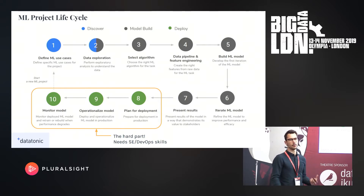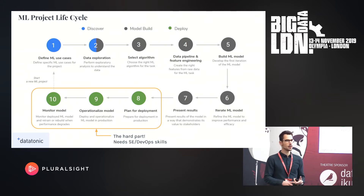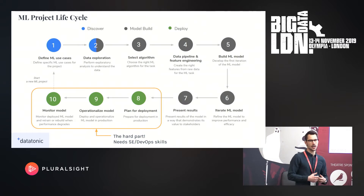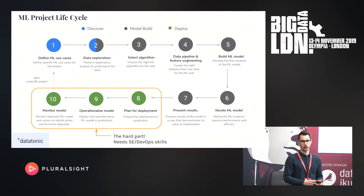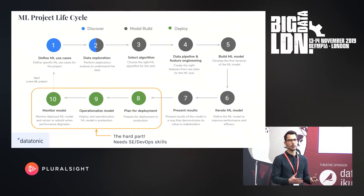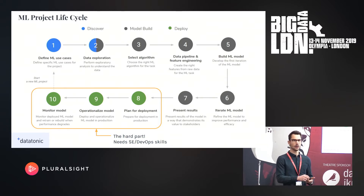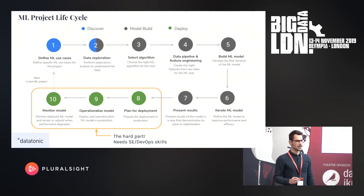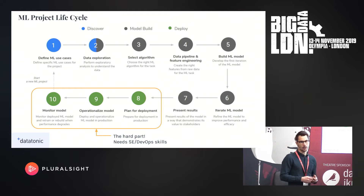Going from step eight to ten requires different tools and different practices. You need to plan for deployment, have knowledge of architecture, hardware, and infrastructure. You need to operationalize the model — making sure the code is reliable, has logging, and the right elements of monitoring. Lastly, you need to deploy it and constantly monitor the code itself, the robustness and reliability, but also the output of the machine learning predictions. Steps eight to ten are really the hard part for many data scientists because they involve software engineering and DevOps skills that don't come naturally.